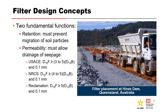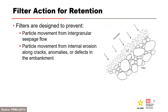Criteria for permeability vary between the federal agencies, but all of them compare the D15 of the filter to the D15 of the base. Filters are designed to prevent particle movement from intergranular seepage flow, where defects are present in a base soil, or seepage water flows through pore spaces of a soil mass in an embankment or foundation. A properly designed filter prevents movement of base soils by seepage forces at a discharge phase, such that bridging between closely spaced contact points prevents any movement of base soil particles into the filter.